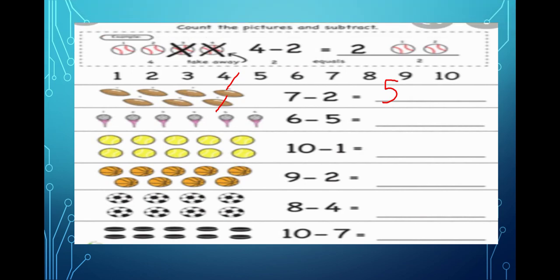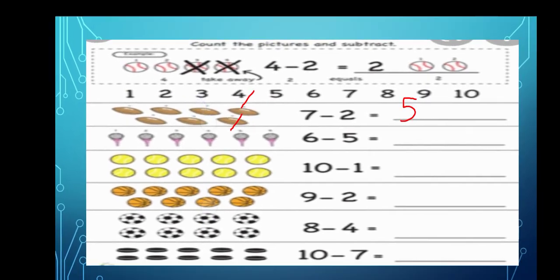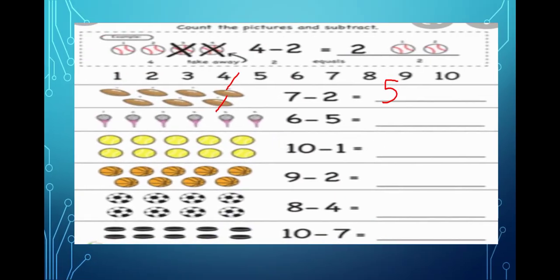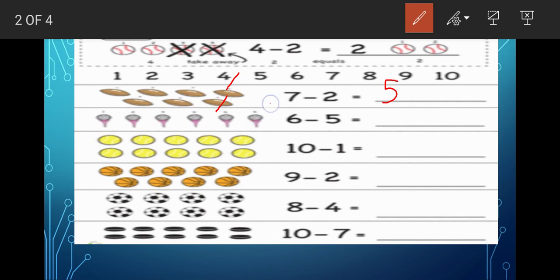In the same way, this is a picture of a watch. So how many watches are there? Six. Out of that you have to cut — cross five watches. So remaining will be: let us cross first — one, two, three, four, five. How many are left? Only one watch is left. That means six minus five is equal to one.